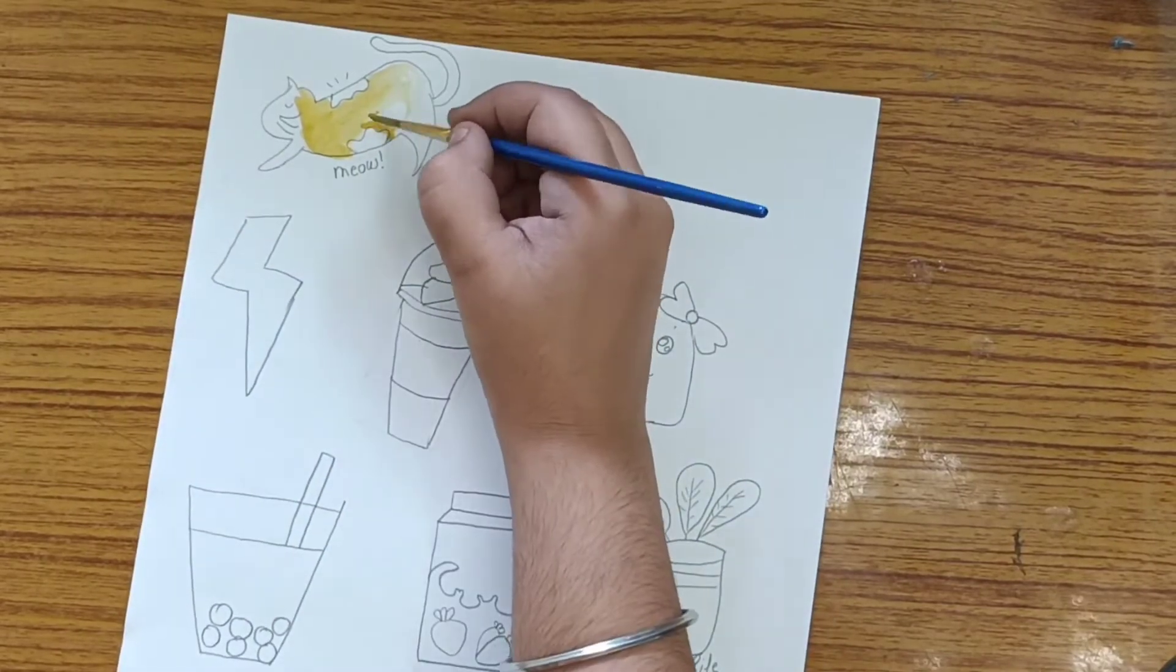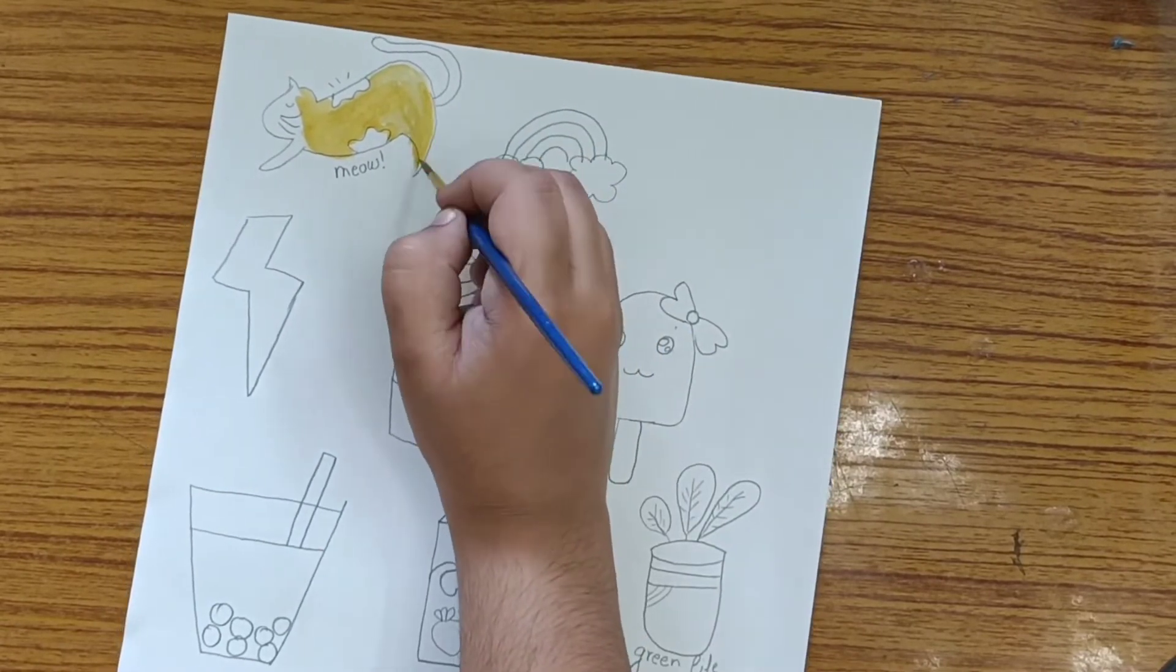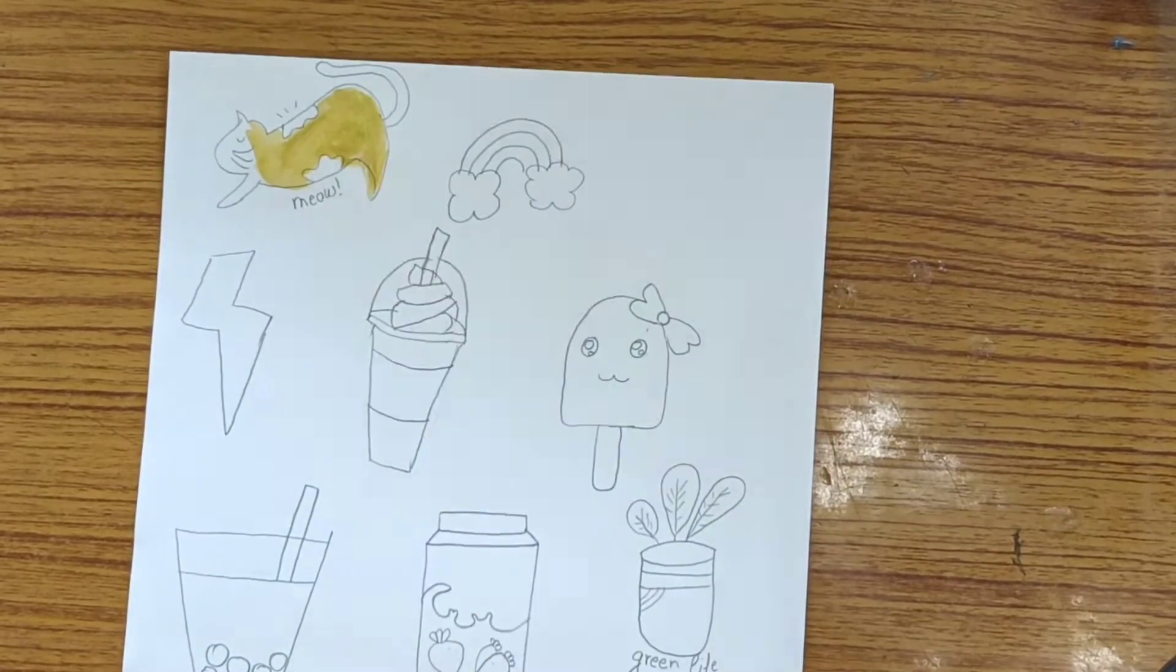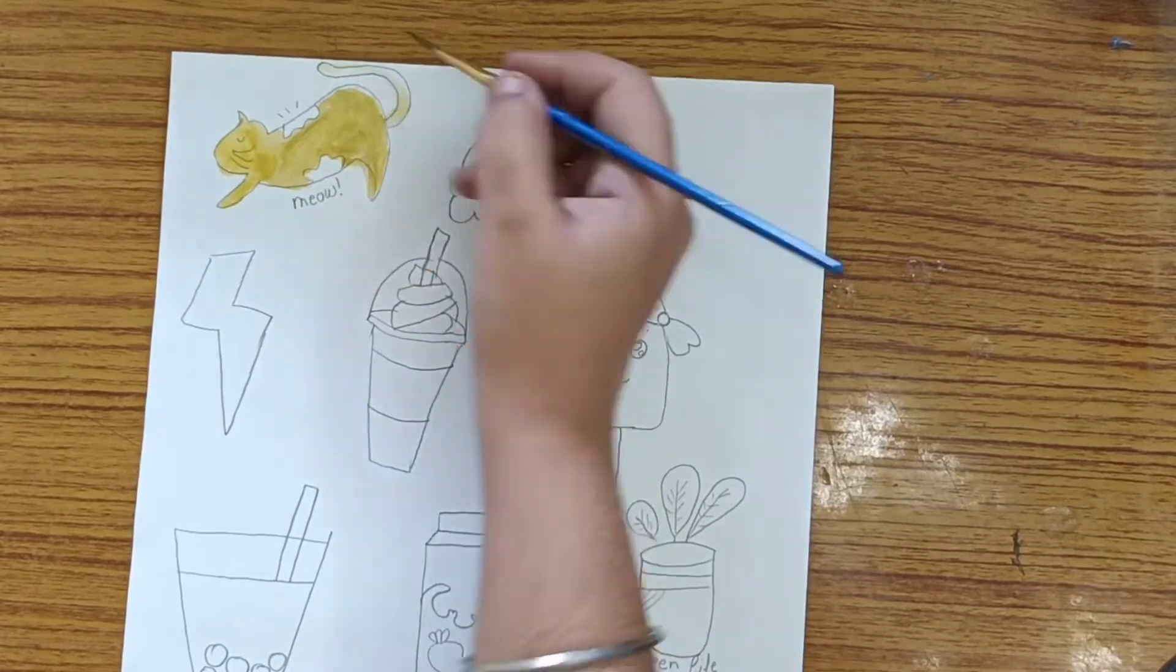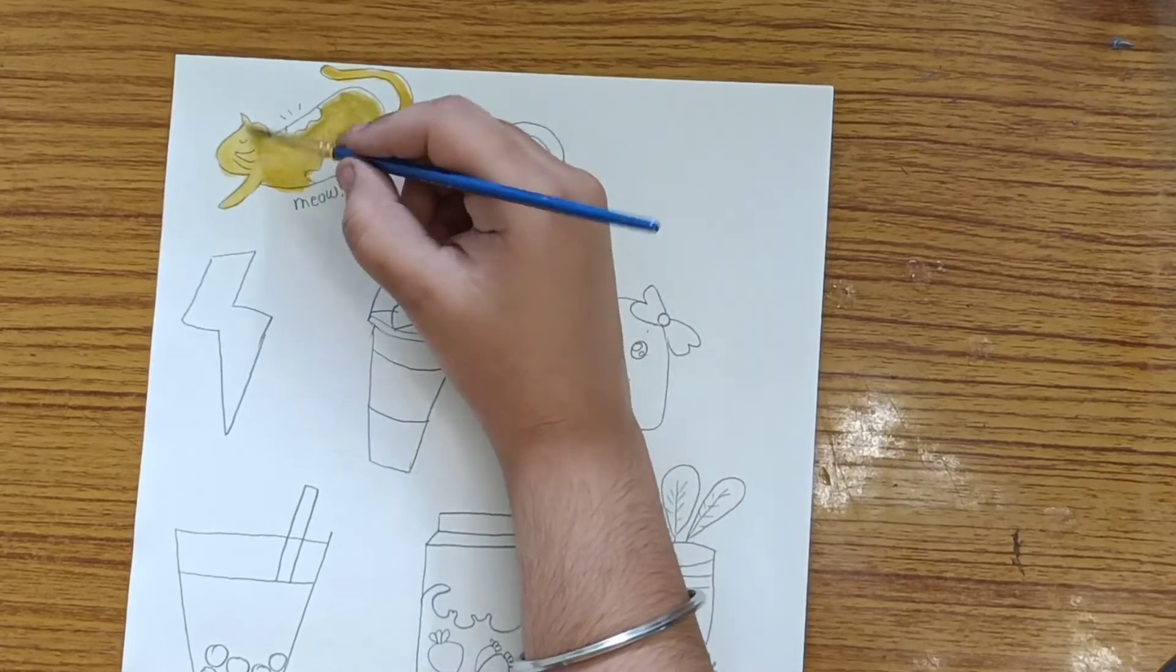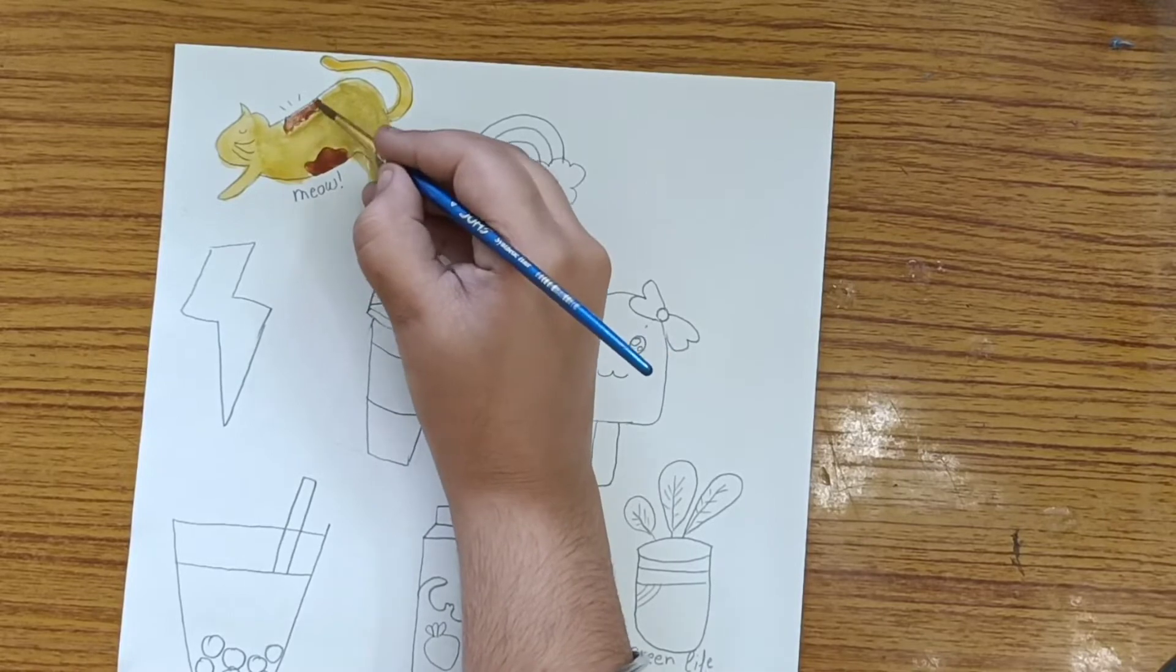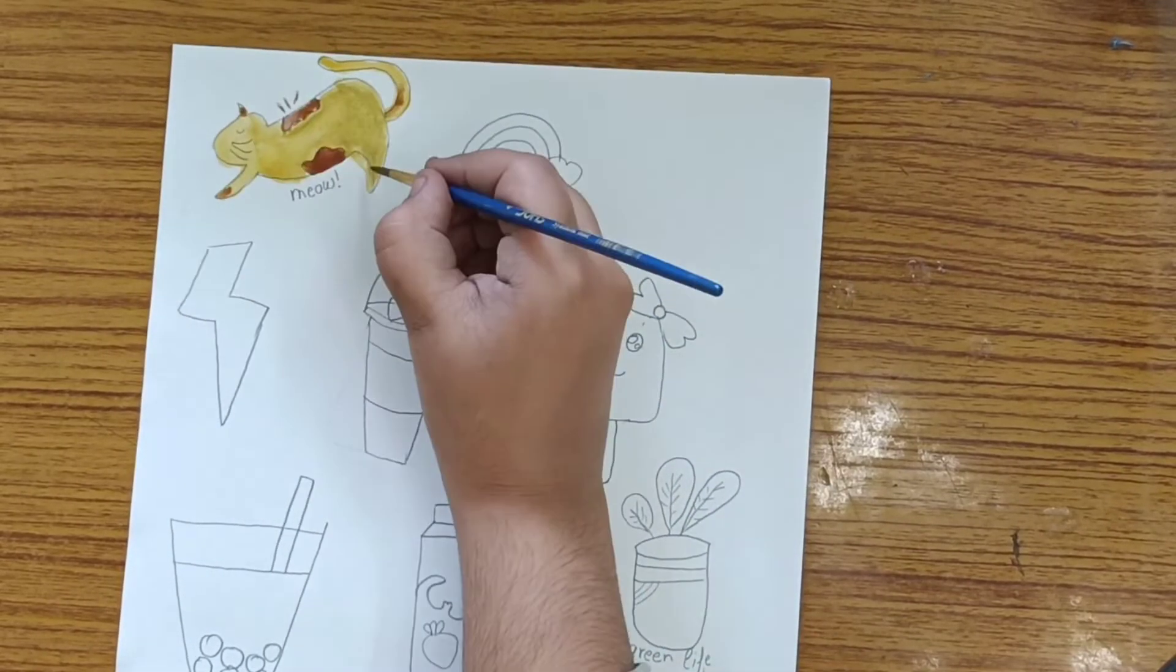First of all, we are going to paint the cat. I am using yellow ochre color for the cat's body and light brown color. Now let's go to the tail, legs and ears. This is your wish - you should color whatever you want to do. That is your choice.